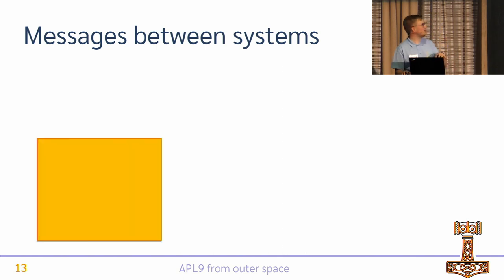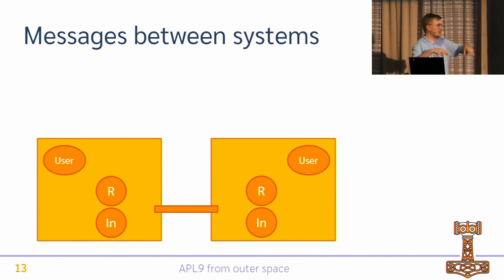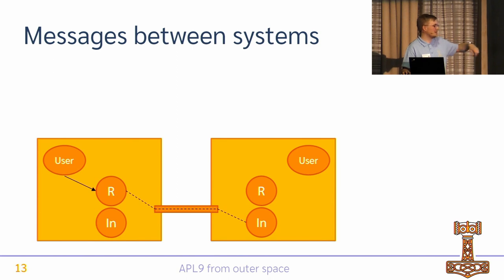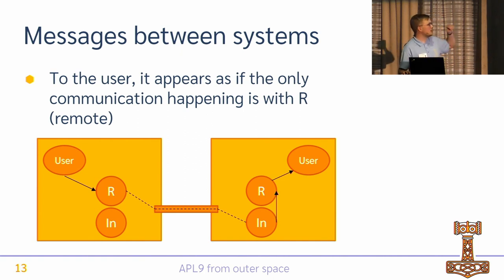The way it's implemented right now: we have two systems connected via a pipe on the file system — we could use a socket or whatever. On each system we have user threads plus two threads for the remote stuff. The R thread is the one the user sends messages to; it serializes and puts them over the network. There's also an input thread that continuously reads from the network — a blocking operation, hence it needs its own thread. It gets an array, deserializes it, and sends it to R. R then realizes the message is not from the user, so it forwards it to the user. To the user, it appears as if the only communication is with R, but actually it's going over the network.